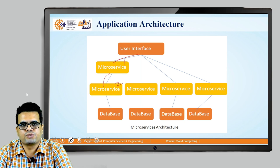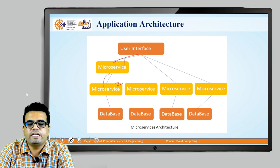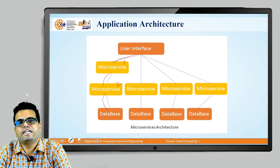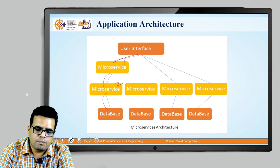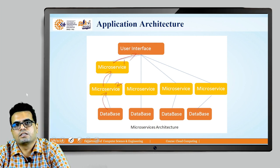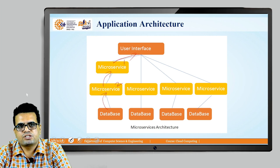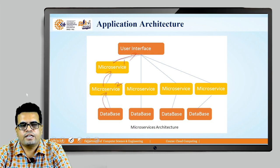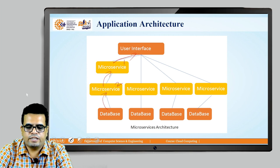Microservice two may need to communicate with the database to get the job done. Then the result comes back to microservice two, and in turn to microservice one, and finally the response is generated. So there will be network communication delay — there will be communication latency in microservice-based architecture.